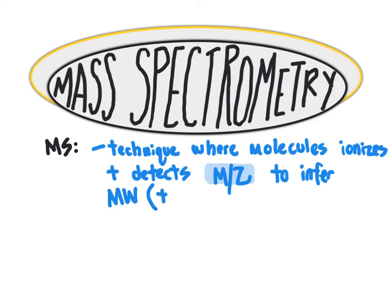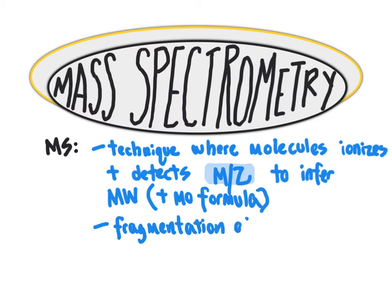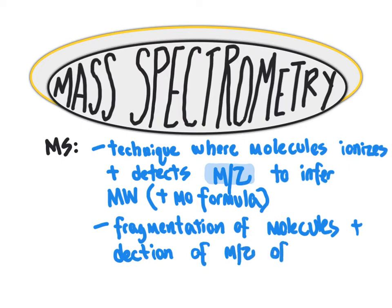With the molecular weight, in many cases we can come up with candidates for the molecular formula. Additionally, another application beyond determining molecular formula is that we can fragment the molecule into fragment ions and use those fragment ions and their mass to charge ratios to determine structural information. Fragmentation of molecules and detection of the mass to charge ratios of the resulting fragment ions can give us clues about the molecular structure.